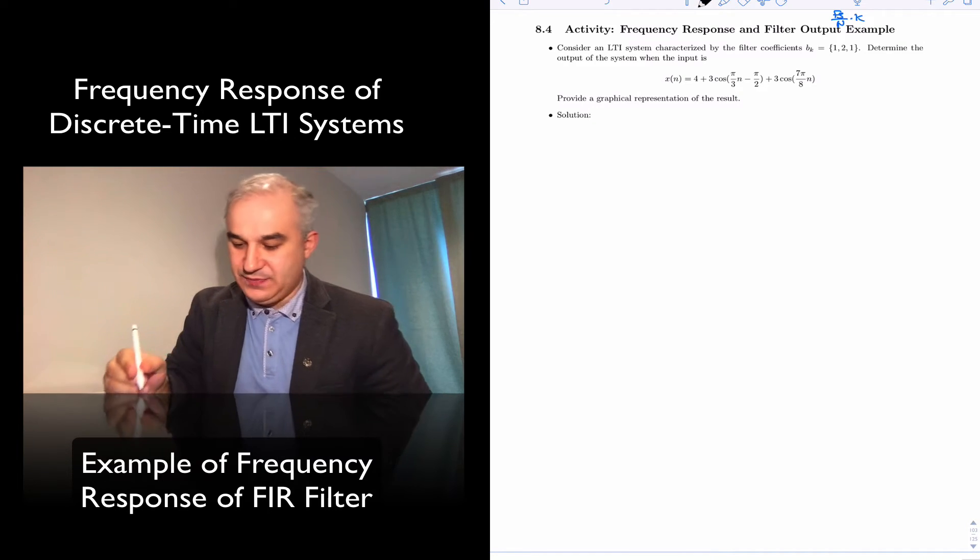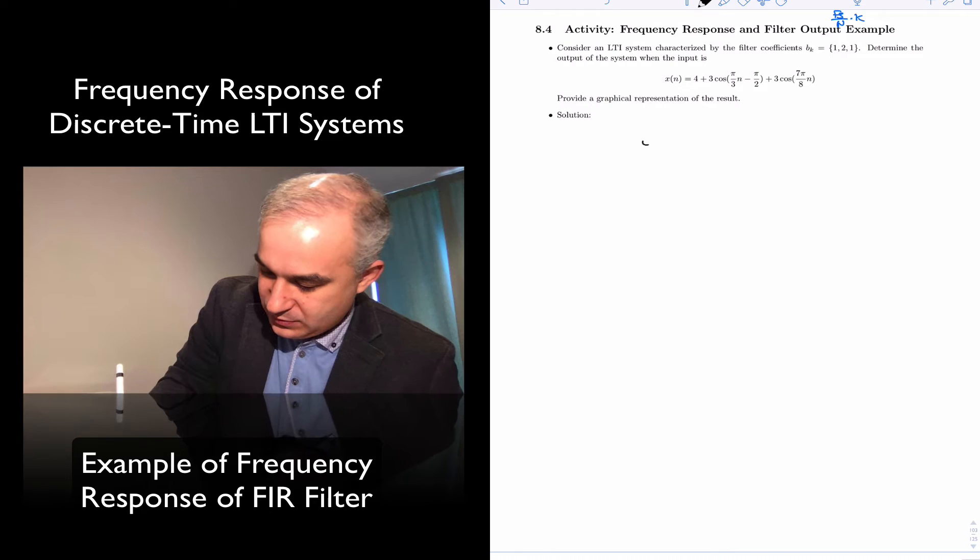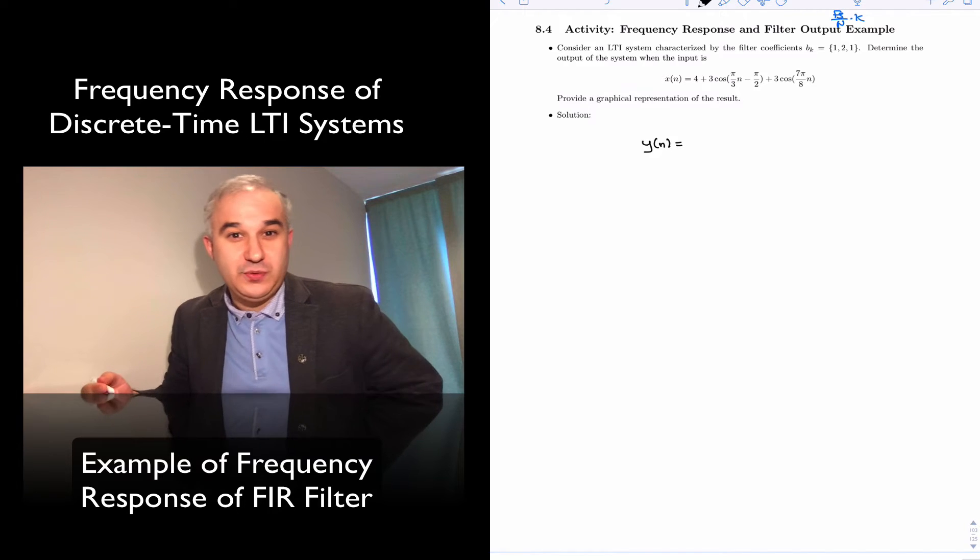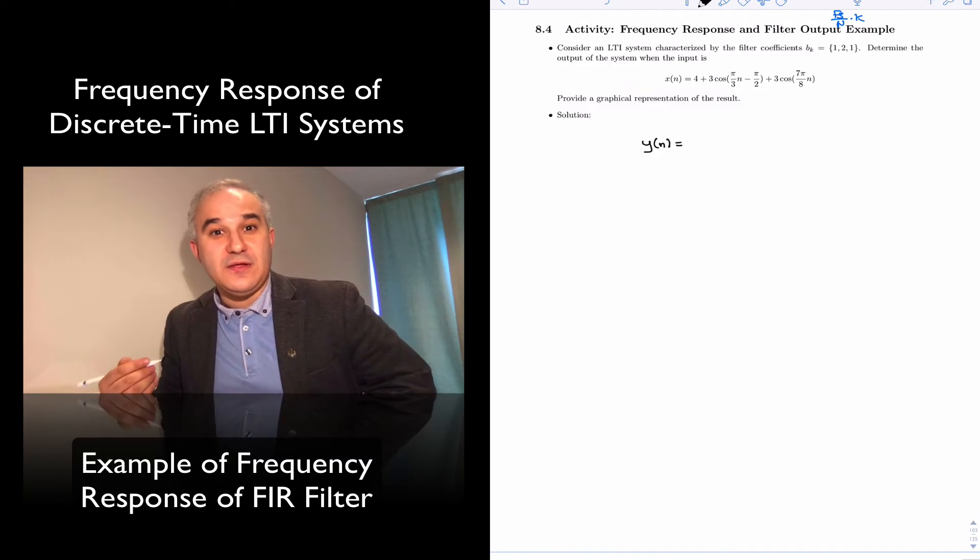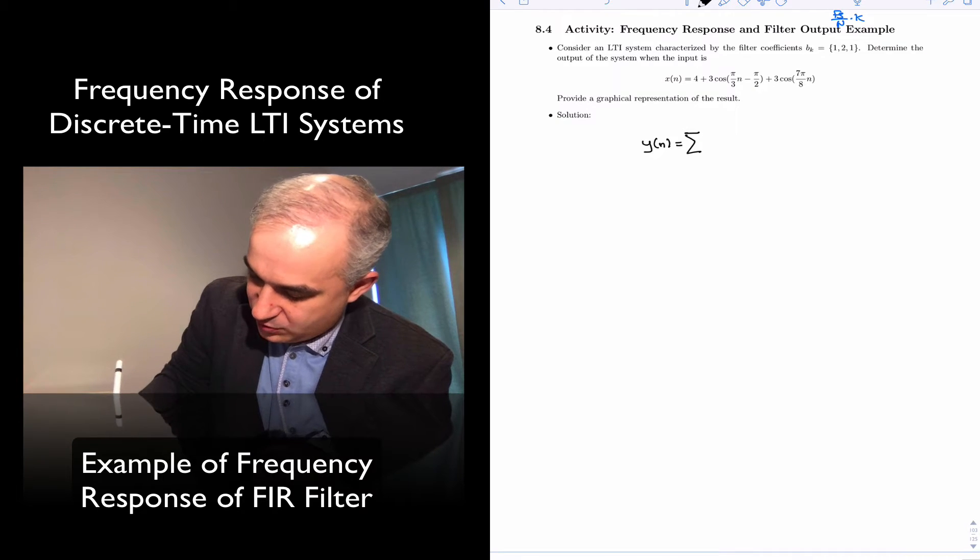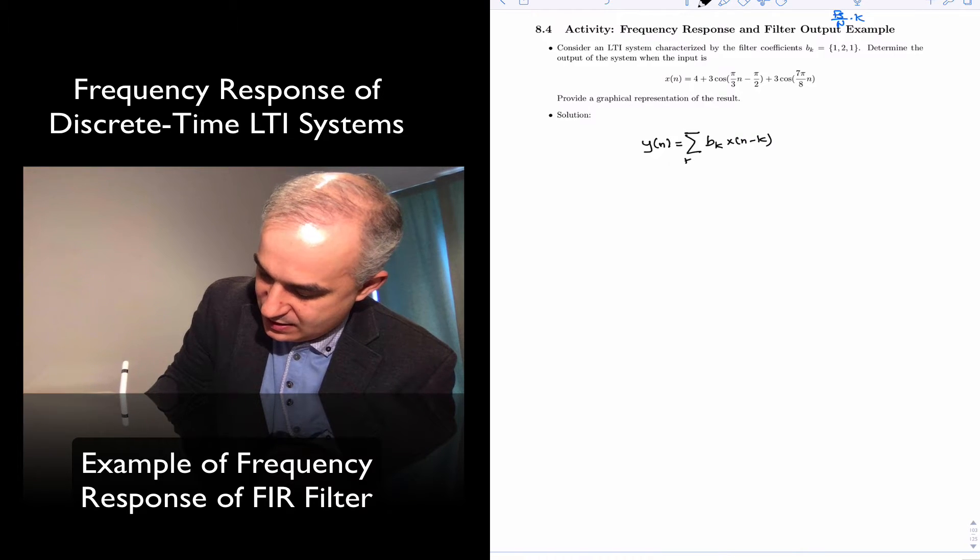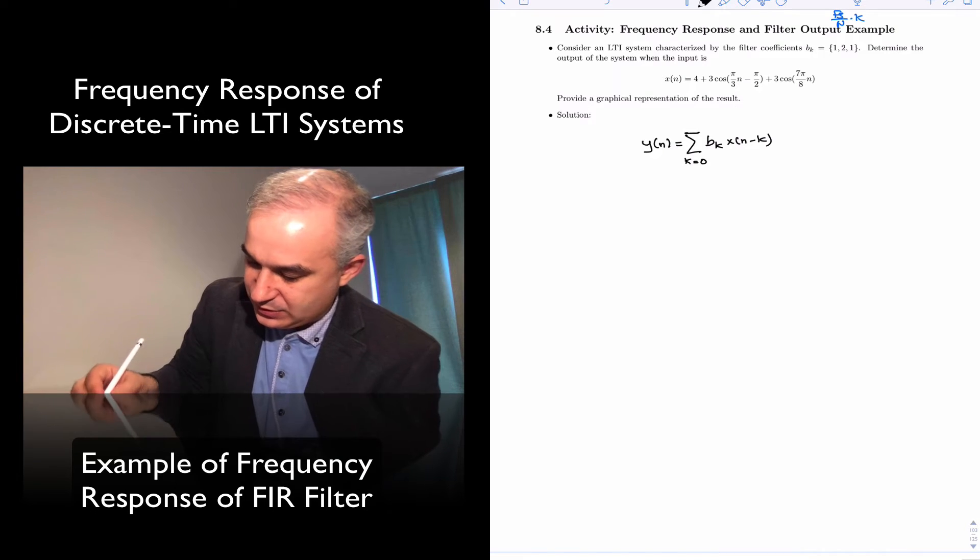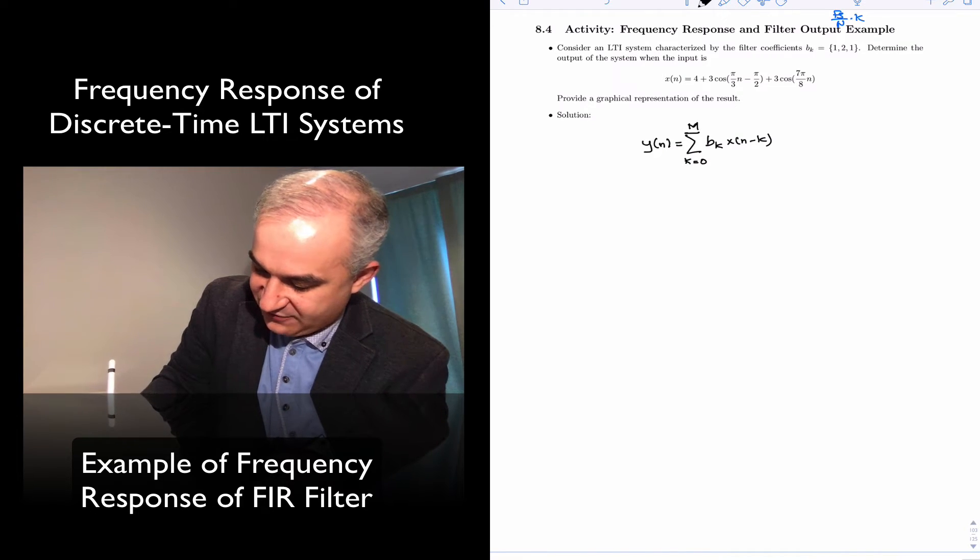Now, in general, the output of a discrete time LTI system is going to be given by the difference equation or by convolution. So in this case, my output will be Bk coefficients, x of m minus k, equals, in general, will be from zero to m for an FIR filter.